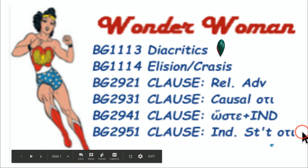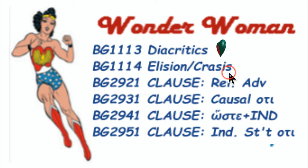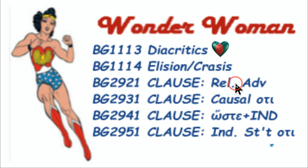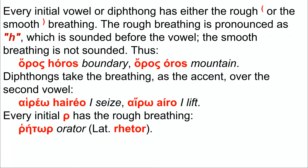This is an Underwoman grammar tutorial. We're going to handle diacritics, elision, and crasis, and the four clauses we need to worry about for the National Greek Exam beginning level. So let's look at diacritics.